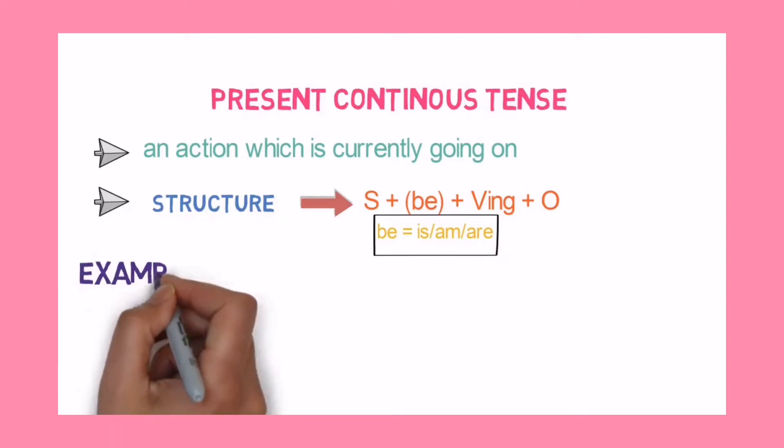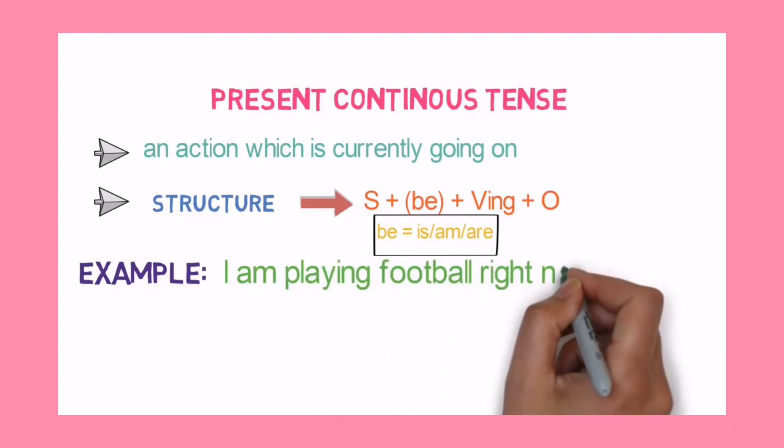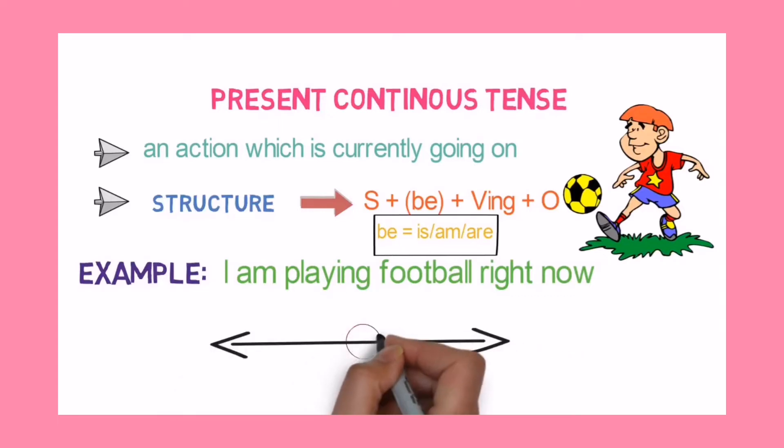I am playing football right now. In this sentence my action of playing football is still going on and has not yet completed. So in the timeline it will appear exactly inside the circle. That indicates that the action is going on right now.